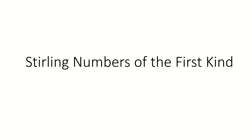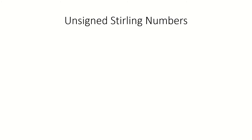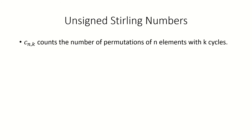Today we're going to look at Stirling numbers of the first kind, beginning with the unsigned Stirling numbers. The unsigned Stirling number of the first kind, c sub n k, counts the number of permutations of n elements with k cycles.